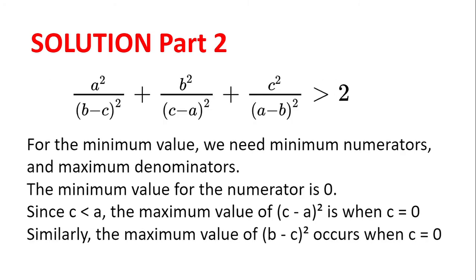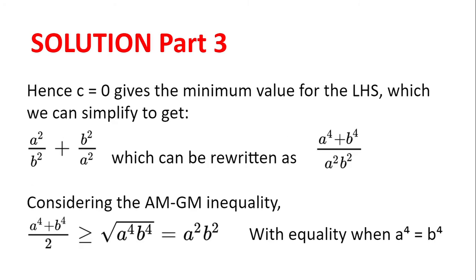To get the minimum value we need minimum values for the numerators and maximum values for the denominators. Since all the numerators are squares, the minimum value for a numerator is zero. Since c < a, the maximum value of (c - a)² occurs when c = 0. Similarly, since c < b, the maximum value of (b - c)² occurs when c = 0. Hence to get the minimum value for the left hand side we need c = 0.